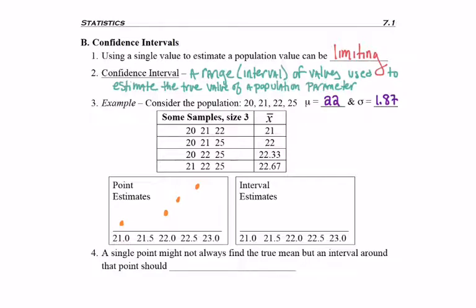Now the thing to remember with this is that the average we were looking for was 22, and as you can see only one of our numbers, one of our samples, actually had the true population value of 22. That's why we were saying these samples are kind of limiting.